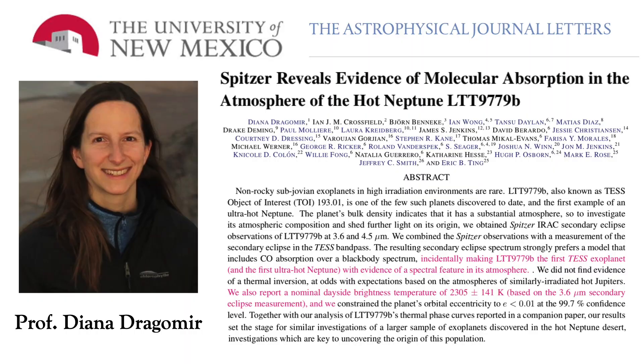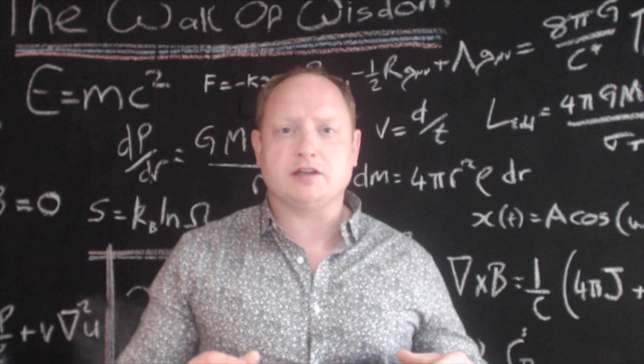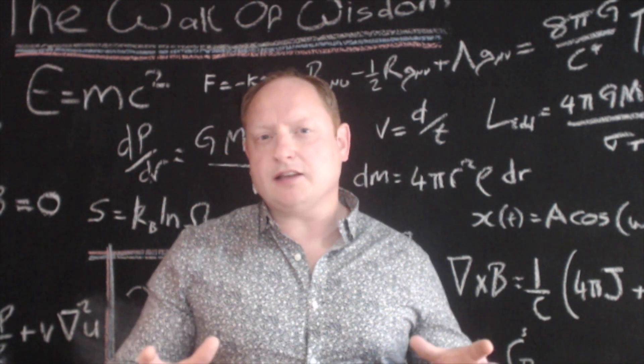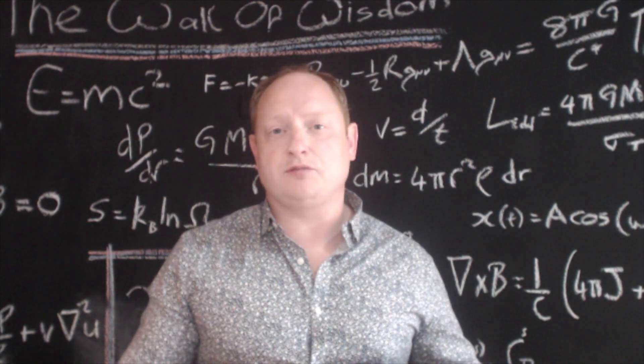The first of the two works we will discuss here is led by Professor Diana Dragomir from the University of New Mexico in the USA. And in this study, we focused on observing the secondary eclipses of the planet across two of the Spitzer bands, centered at 3.6 and 4.5 microns in the infrared part of the electromagnetic spectrum, capturing a total of 12 individual eclipse events.